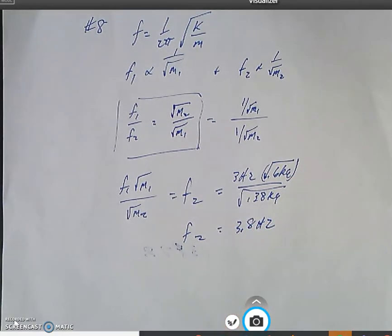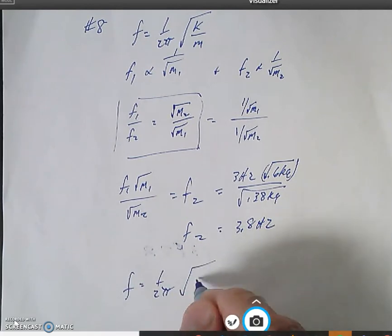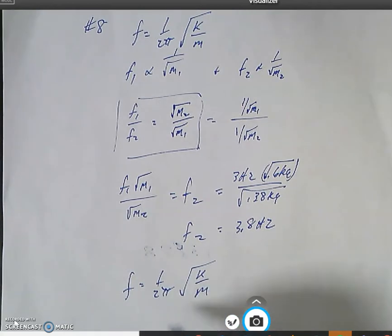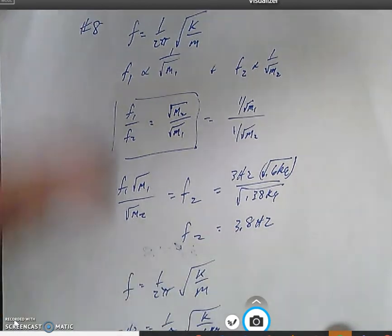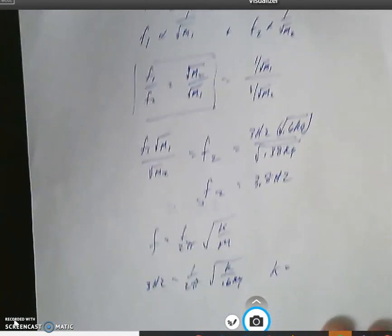hertz. Now the other way to do that, you could take f equals 1 over 2π square root k over m. We know f, f is 3 hertz, equals 1 over 2π times the square root of k divided by 0.6 kilograms. I could find the k value here. Oops, I'm running off the screen here. I could find the k value here, k equals some number,